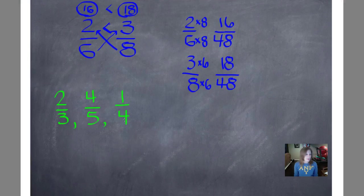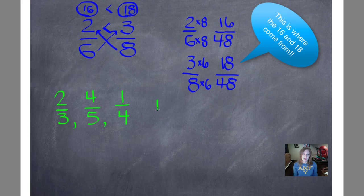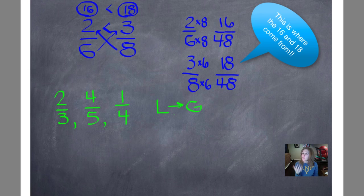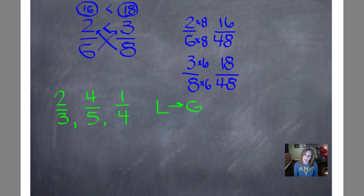I'm going to be ordering these from least to greatest. On my paper, I always put a capital L and an arrow and a capital G. I do this because when I'm done ordering, I want to go back and make sure I really put them in order. One of the most common mistakes that fifth graders make is to order them correctly, except backwards — maybe putting them in order from greatest to least instead. So write that least to greatest right there on your paper.